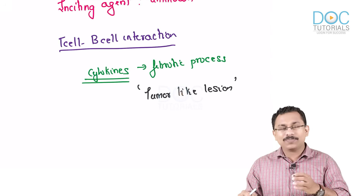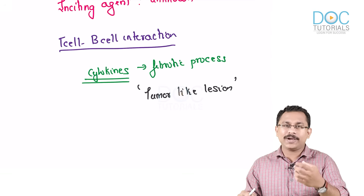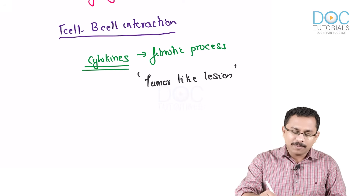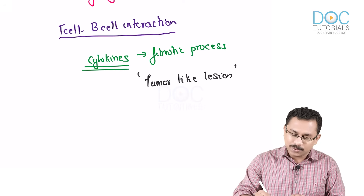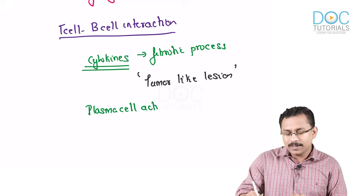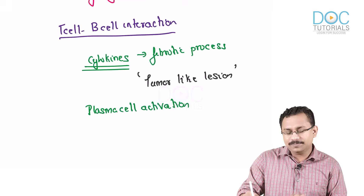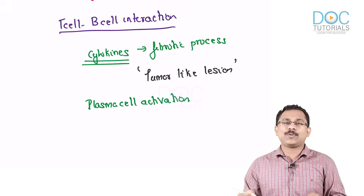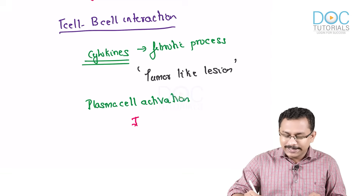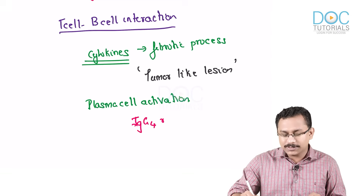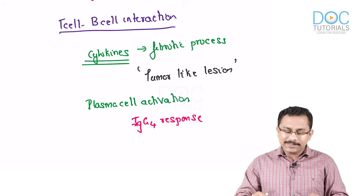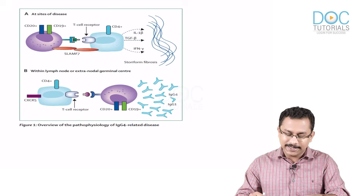The end result of cytokine production is not just tumor-like lesions. You will also have a lot of plasma cell activation, with B cells producing various antibodies, of which there is a dominant IgG4 response.